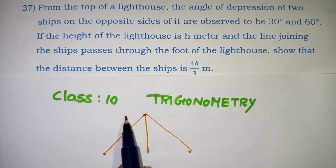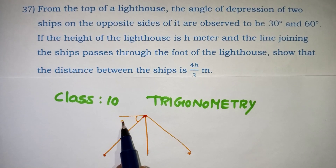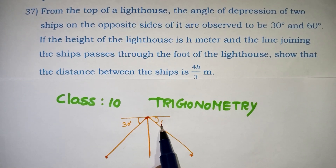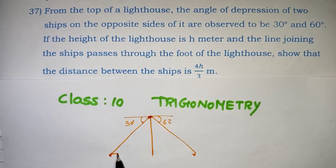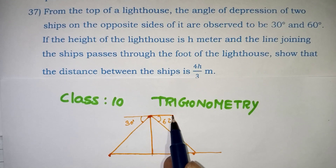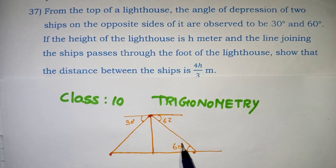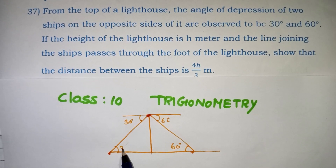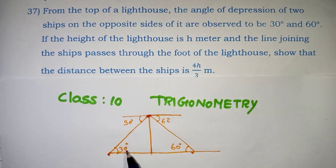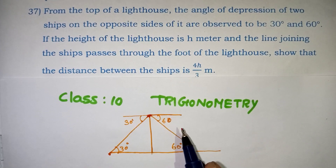If you look at the diagram, you will see the angle of depression. This angle is 30 degrees and this one is 60 degrees. This is the sea level line, and it is parallel. Using alternate interior angles, the angle at the base is also 60 degrees on one side and 30 degrees on the other.